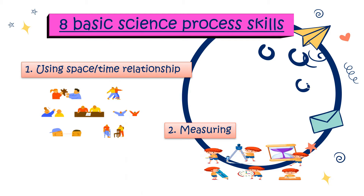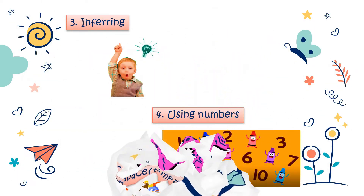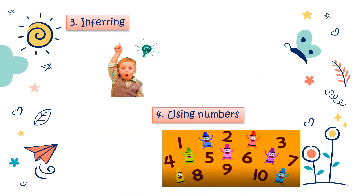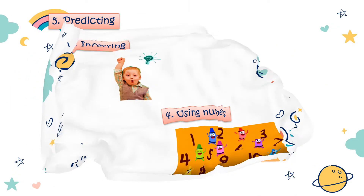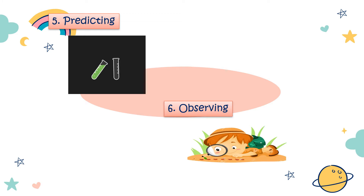Here are the eight basic science process skills. Number one: using space-time relationship. Number two: measuring. Number three: inferring. Number four: using numbers. Number five: predicting. Number six: observing.